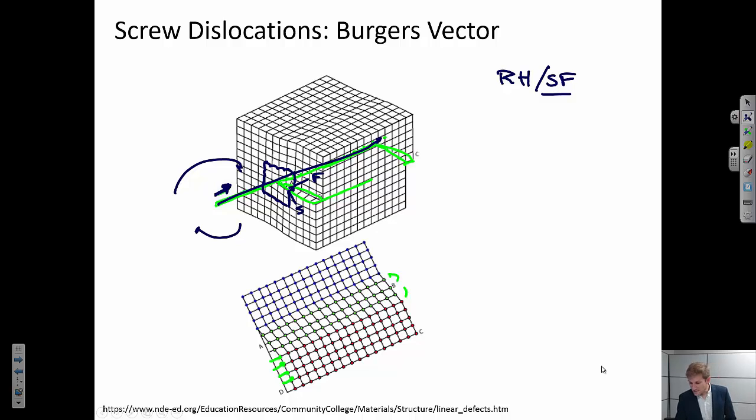So again, I draw a vector that goes from the start to the finish, and that vector is the burgers vector. It's hard to see just because I've drawn it so small, but it's one unit cell in that direction. And again, I use the symbol B to denote the burgers vector.